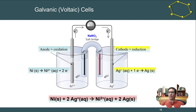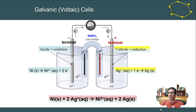As nickel solid becomes nickel ions, we're generating more positive charge in solution and need more negative charge to balance — so nitrate from the sodium nitrate salt bridge flows into that beaker. Similarly, as silver ions gain electrons and become solid silver, we're losing positive charge on that side, so sodium ions flow in to balance. By convention, electrons flow from the negative to the positive terminal, so the anode is the negative side and the cathode is the positive side.